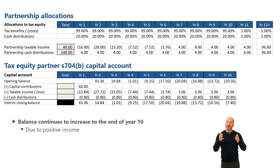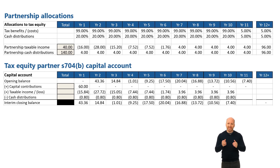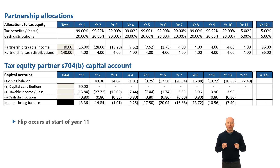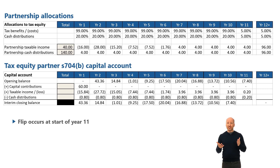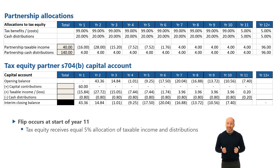The flip occurs in year 11, which reduces the tax equity's allocation of taxable income and cash benefits. So with an opening capital account balance of negative $7.4 million, the tax equity partner will receive 5% of the $4 million of taxable income and 5% of the $4 million in cash distributions. And as taxable income and cash distributions are equal, the capital account doesn't change — it's just going to remain at that negative $7.4 million until the end of the project life.